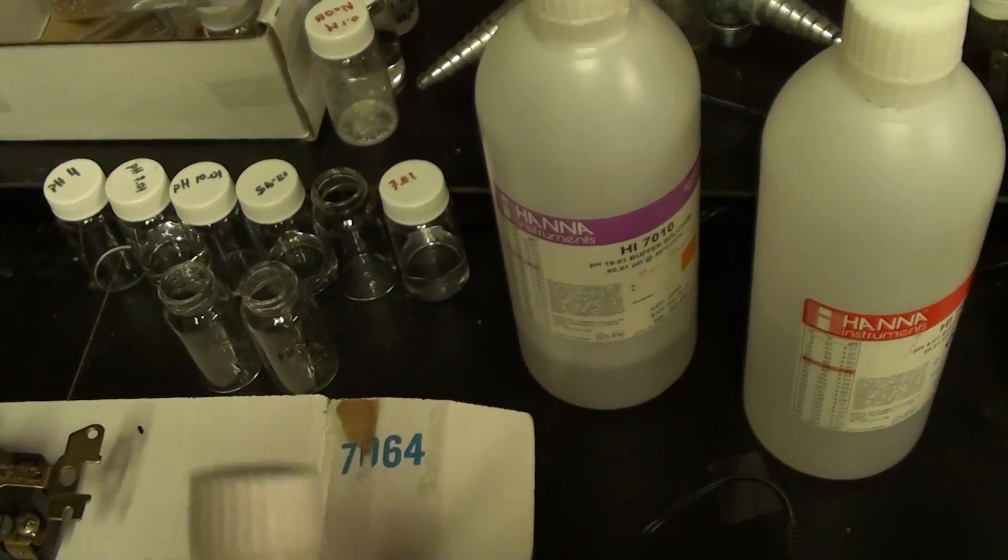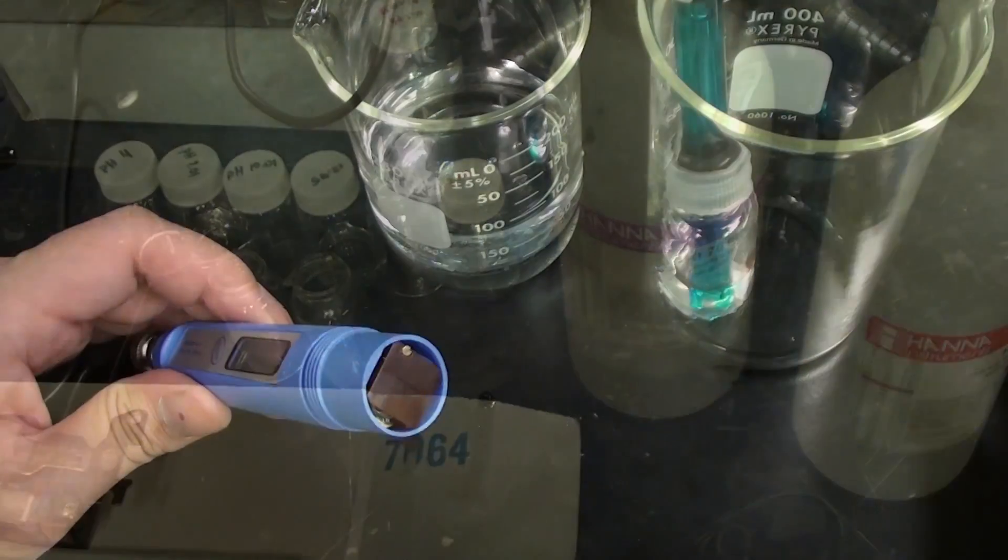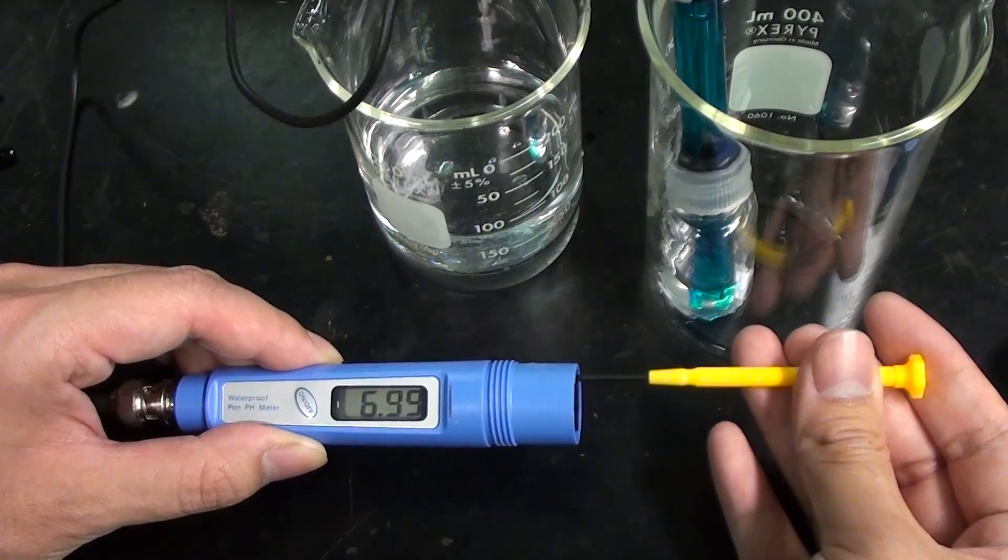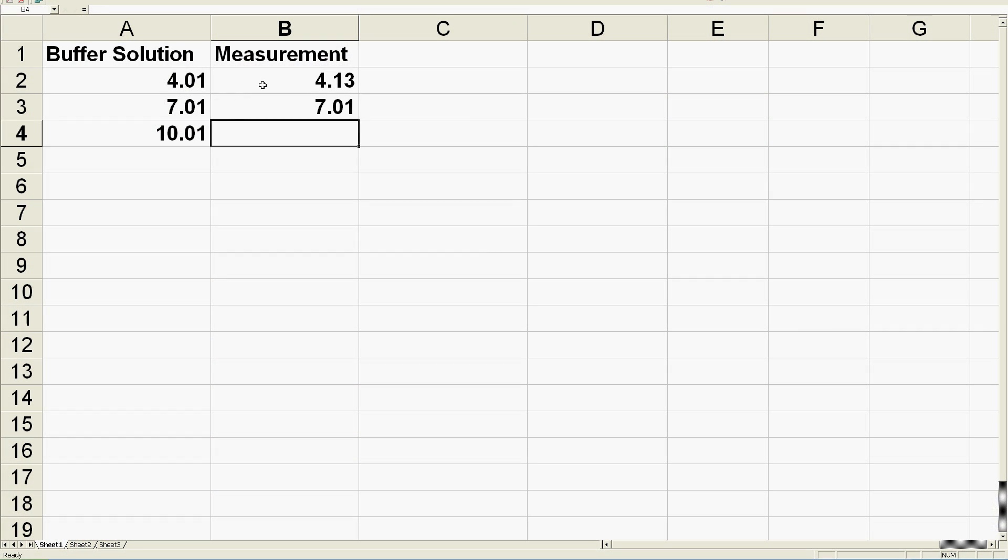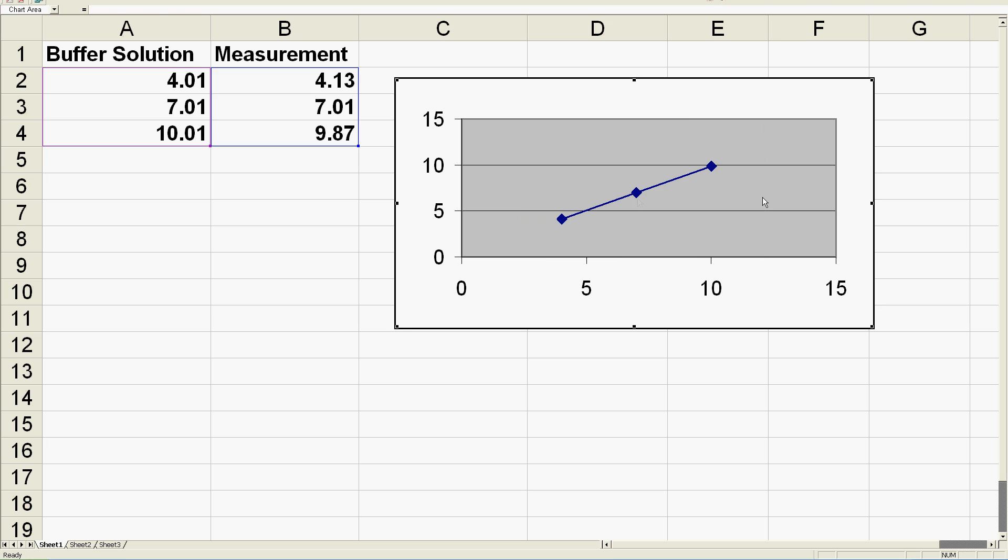First, get a few different pH calibration buffer solutions. I'm going to use three. After physically calibrating your meter with one solution as best you can, measure all three solutions and then plot the measured readings versus the known pH as a scatter plot in a spreadsheet.